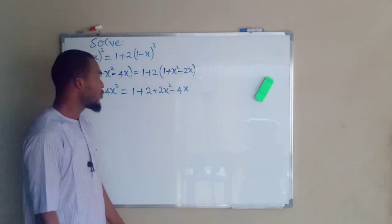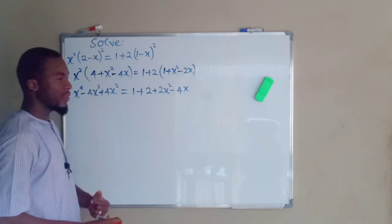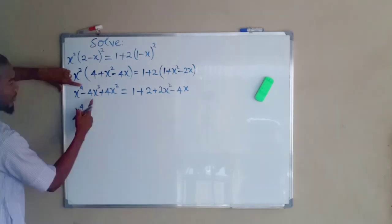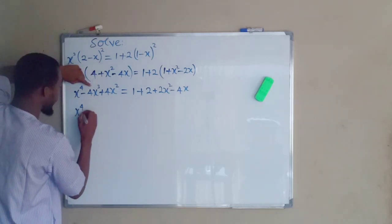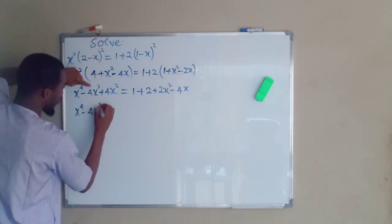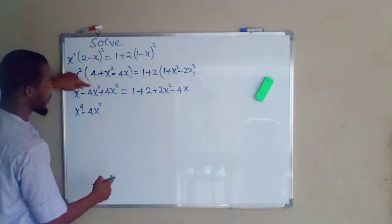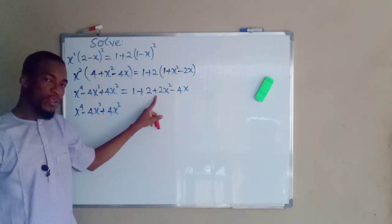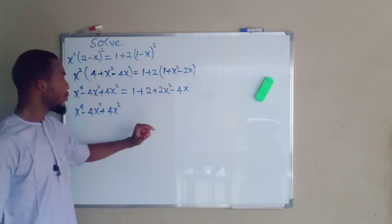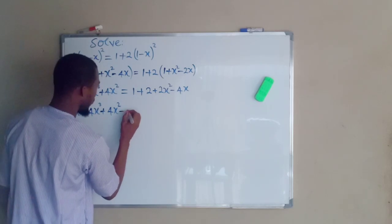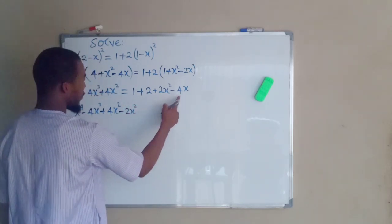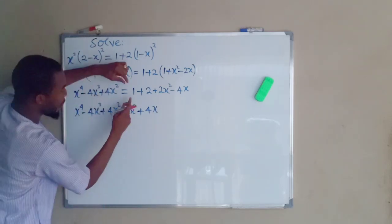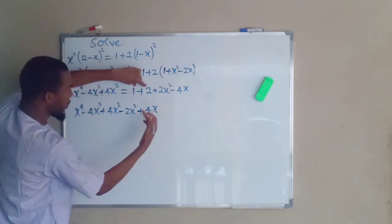Next we are going to bring all the terms from the right hand side to the left hand side, leaving only zero on the right. So we have x to the power of 4; we don't have any x to the power of 4 on the other side, so we bring the next term: negative 4x to the power of 3. We don't have any term of index 3 on the right. Then plus 4x squared, but we have another one here. Once a term crosses the equality sign, whatever sign is attached to that term changes to its opposite — so from positive to negative — giving negative 2x squared.